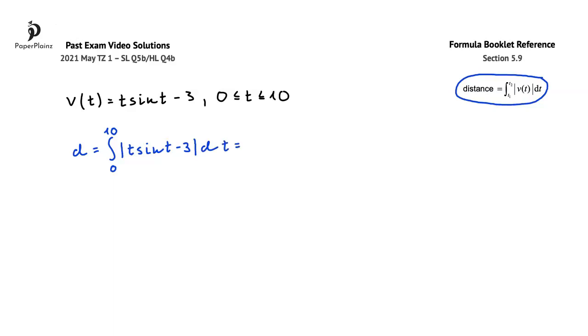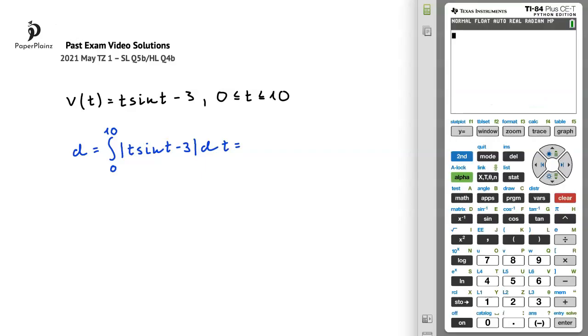From here, we'll use our calculator to evaluate the integral. To do so, we'll press math, and then choose integration, so fn int, which is number 9.